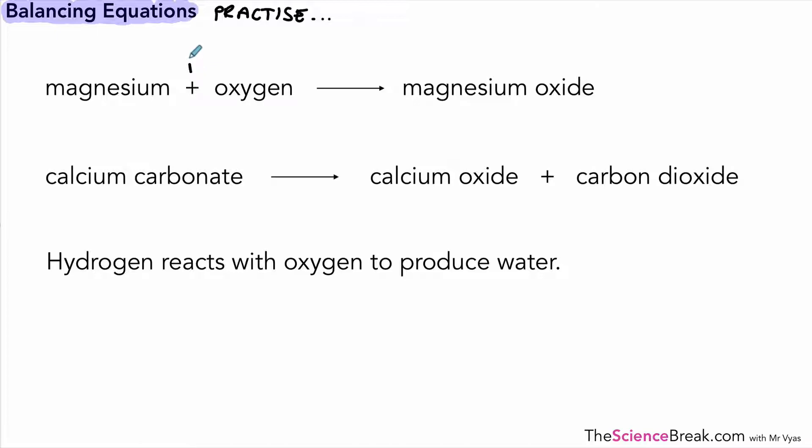So firstly I've got some word equations. There's one at the top there. In that word equation we've got magnesium plus oxygen, and that plus sign basically means reacts with. The arrow basically means to make or to produce. So magnesium reacts with oxygen to make magnesium oxide.